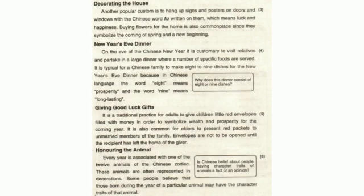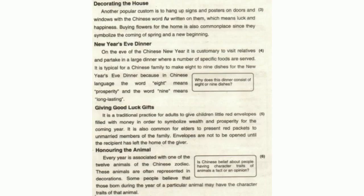Passage number four: New Year's Eve Dinner. On the eve of Chinese New Year, it is customary to visit relatives and partake in a large dinner where a number of specific foods are served. Urdu: Chini Saal-e-No ke mauqe par rishtedaron se milne aur ek bade sham ke khane mein shirkat ki jaati hai jo makhsoos khanon se tarteeb di jaati hai. Key words: customary — rawajana; visit — mulaqat karna; partake — shirkat karna, shamil hona; specific — makhsoos; prosperity — khushali.